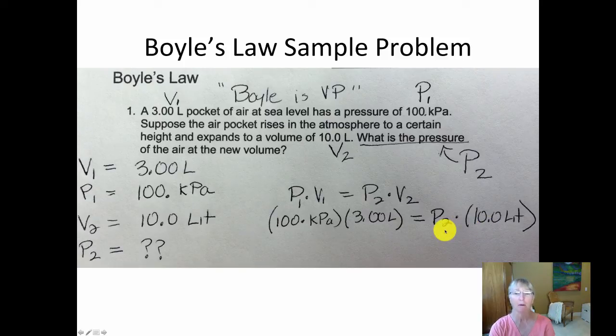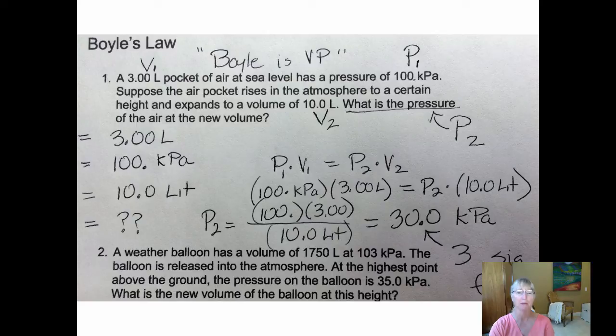Again, 8th grade algebra says I should be able to rearrange that equation. And here it is rearranged, where the P2 must be equal to the P1 times V1, 100 times 3, divided by the V2. And that's the 10 liters that's right here and here, and that's why it's divided by 10.